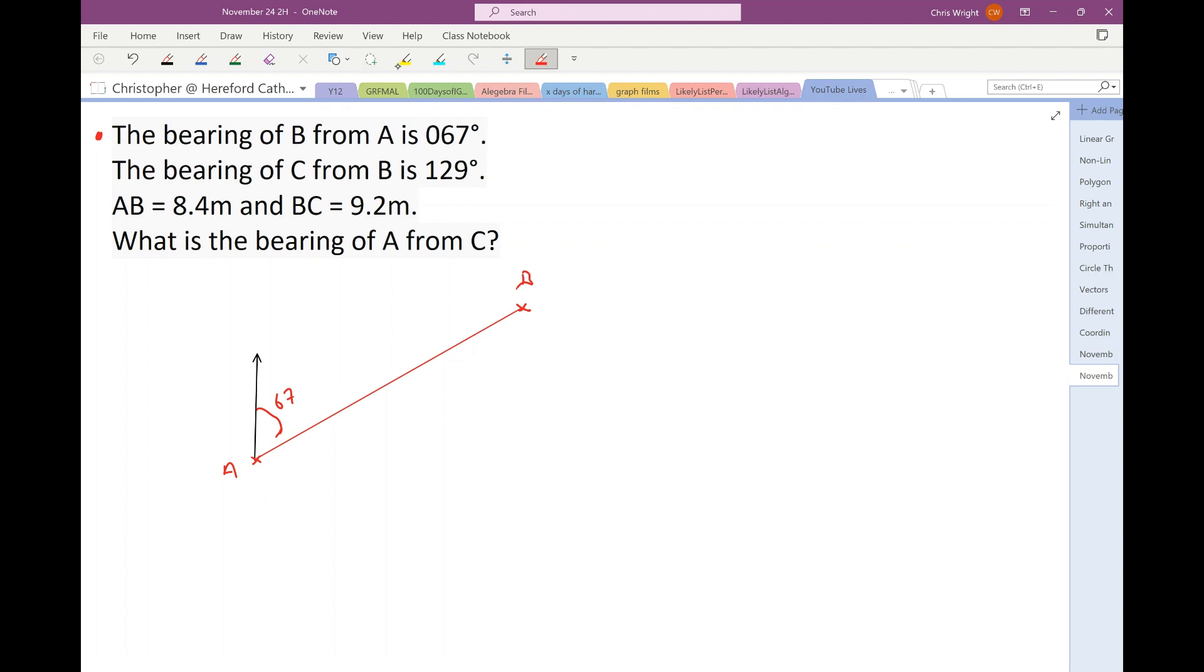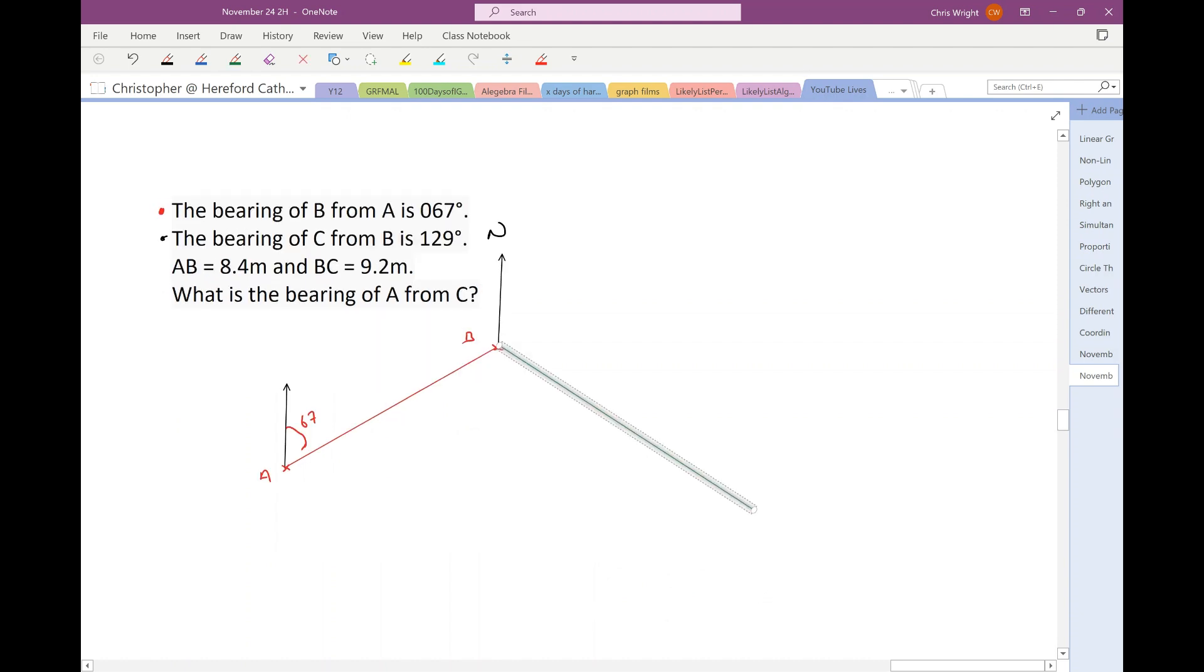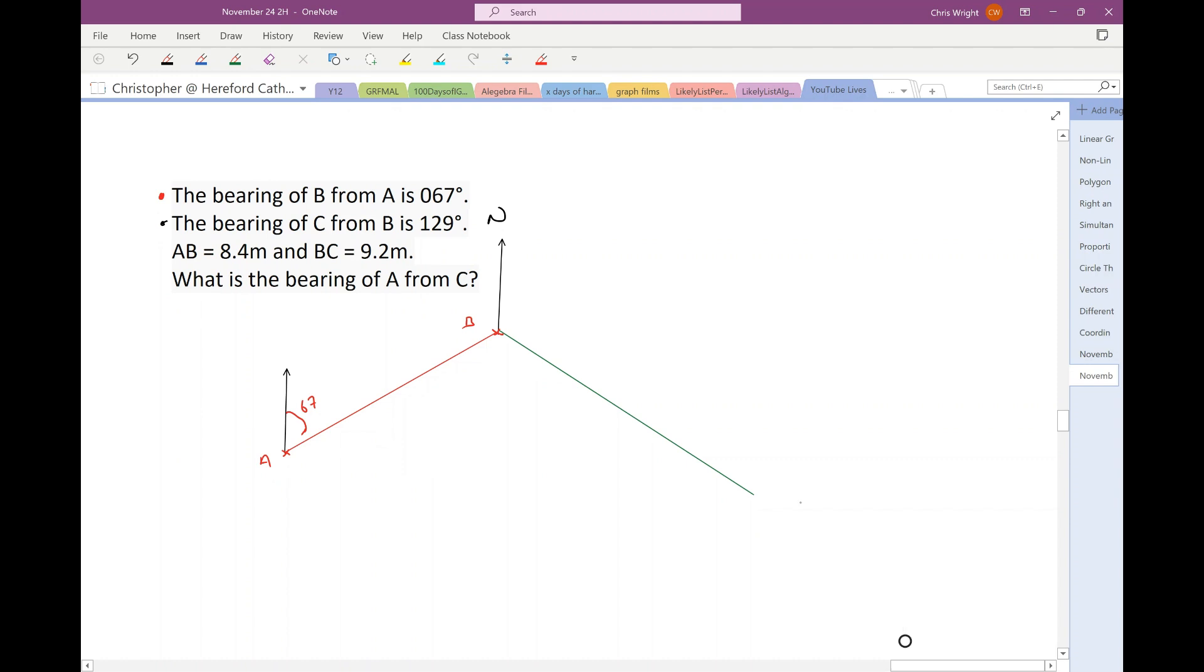Right, next piece of information is that, do this in black ink, the bearing of C from B. Right, I'll draw myself a north line again. The bearing of C from B. Right, there's my north line. It's 129, right. Okay, so that's 90. 129. Slightly less than halfway. Slightly less than 135. Right, so let's put it here. So, that can be my point C.